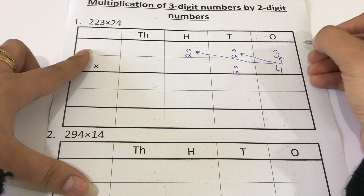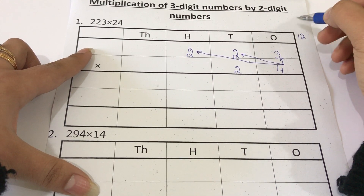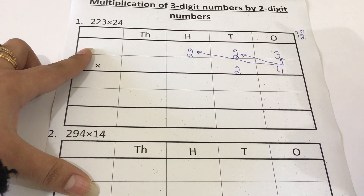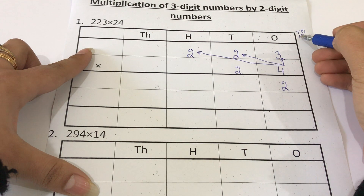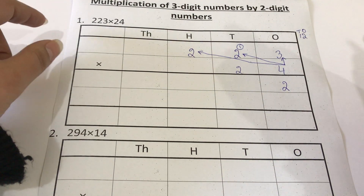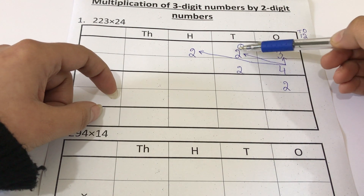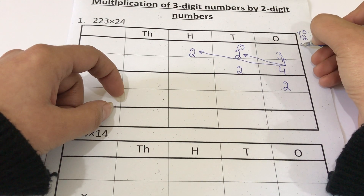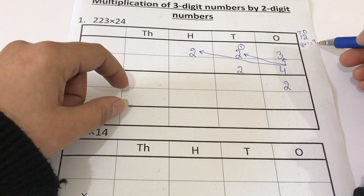Four threes are twelve. As it's a two-digit number, we will convert it. After conversion we will have two ones and one ten carry. We write two in the ones column and the ten is a carry. Next we multiply this four with the digit in the tens place, which is two. Four twos are eight, and eight plus one carry is nine — a single digit, so we write nine in the tens place.